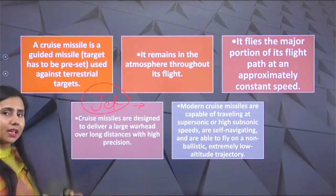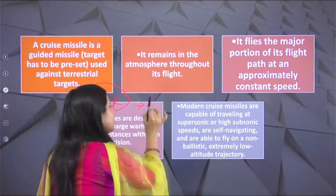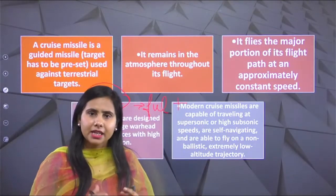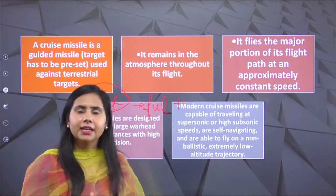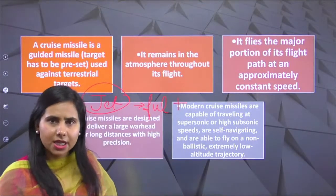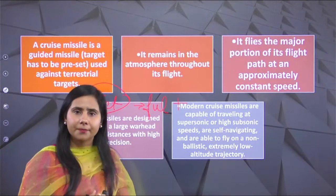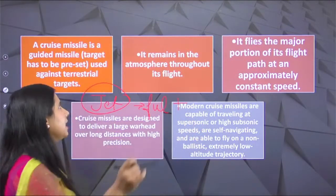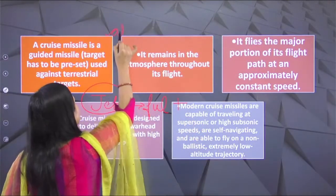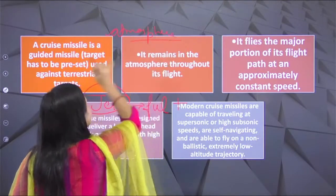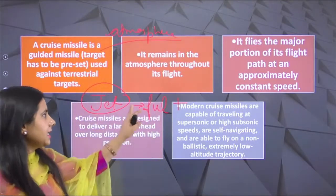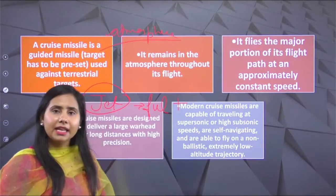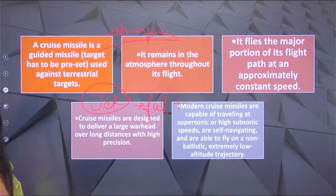Cruise missile relies on jet technology. It means it carries its own fuel — propulsion — but for oxygen it is dependent on the atmosphere. The more oxygen it draws from the air as it moves, the more speed and upthrust it gets. It is completely dependent on air for oxygen, which is why it can never cross the outer atmosphere.